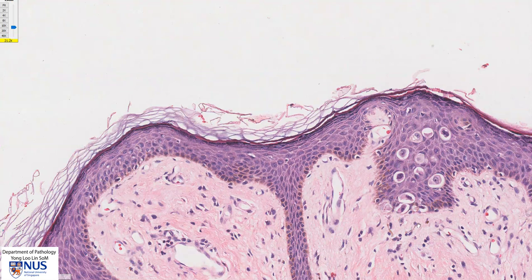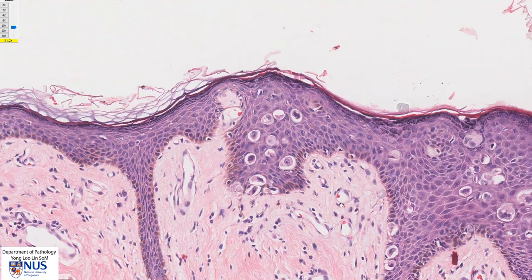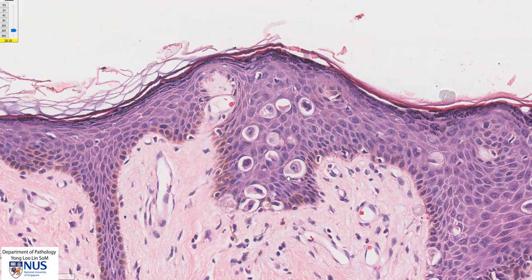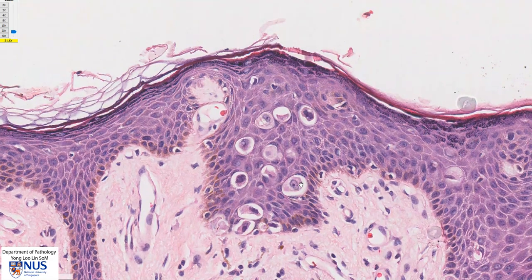Now I'm going to navigate towards the abnormal area, and here we start to see some pathology. There are these very large cells dotted throughout the epidermis, and if we look carefully at these cells, we can see that they have large irregular nuclei, very prominent nucleoli, and abundant pale eosinophilic cytoplasm. These cells are bigger than the surrounding squamous cells. These are malignant glandular cells.